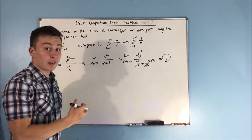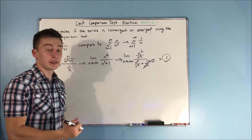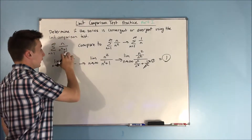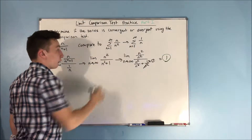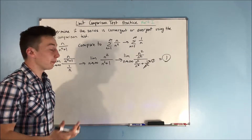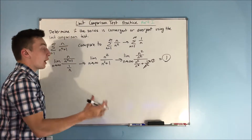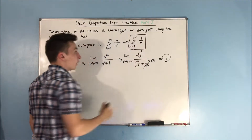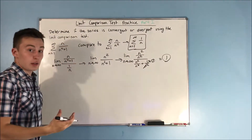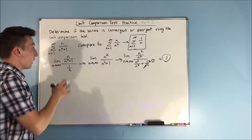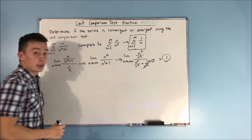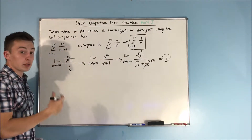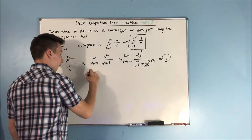Now, one is finite and greater than zero. That means that either both these series converge or they both diverge. We know that this series — one over n — diverges. That means that both will diverge, and the series is divergent by the limit comparison test.